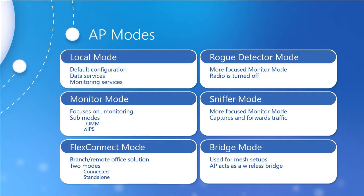As far as these modes are concerned, we have the local mode, which is the default configuration providing full access point capabilities. In this case, 99% of the time is devoted to data services, with 1% of the time devoted to monitoring. These access points will do a full channel scan every 180 seconds looking for rogue devices. A rogue device is not always a bad device — it could be an actual rogue device, or just our next door neighbor's access point within range. All of the information gathered during this 1% monitoring time can be collected by a controller or sent to another central device.